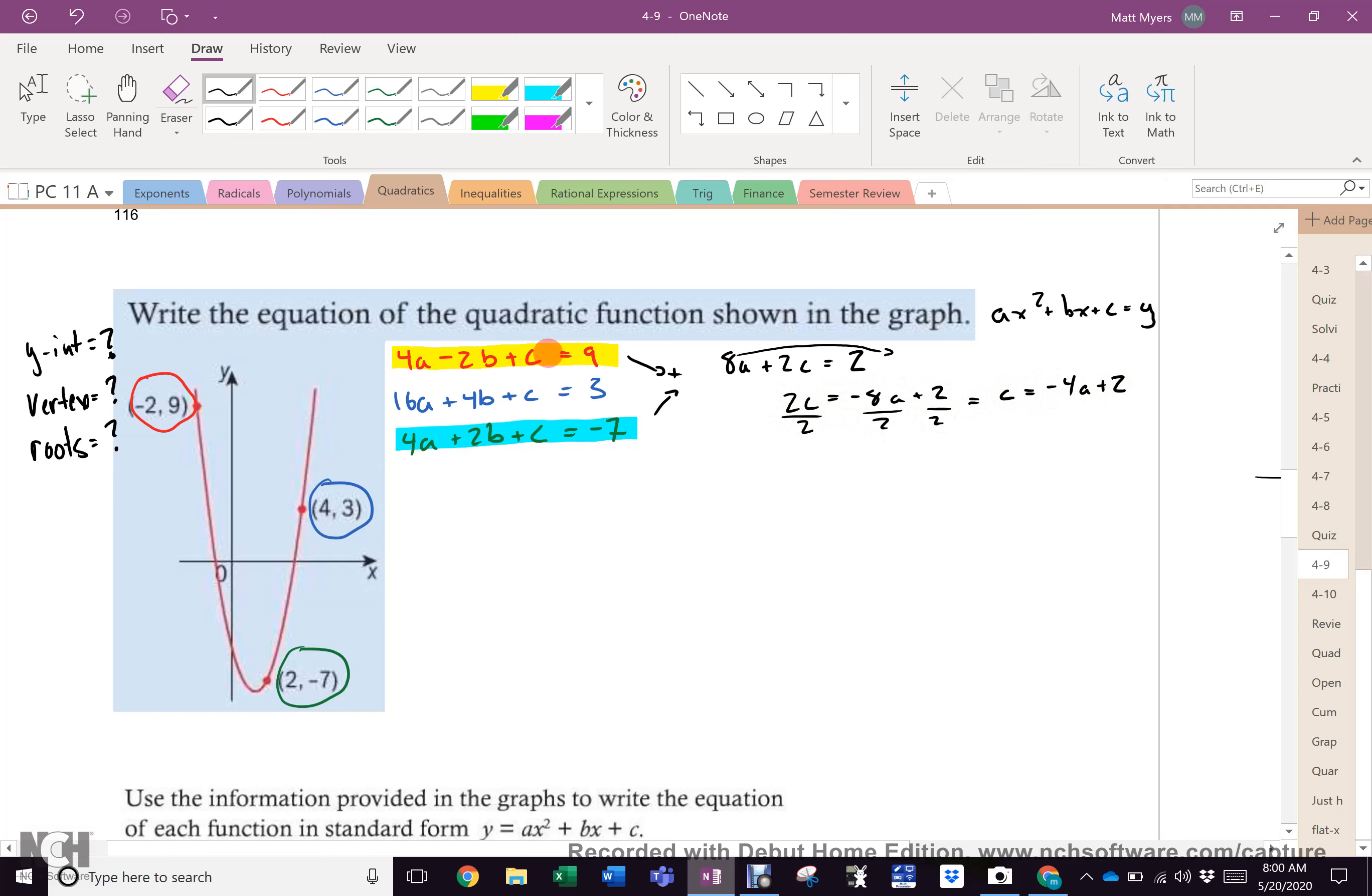That is c. What do I see right there? What do I see right there, right there, and right there? I see a c. So, my new red equation is now 4a - 2b + c, which is -4a + 1, equals 9. So, that becomes 4a + -4a. Hey! The a's disappear. -2b + 1 equals 9. So, -2b equals 8. So, b equals -4. So, now I know b.